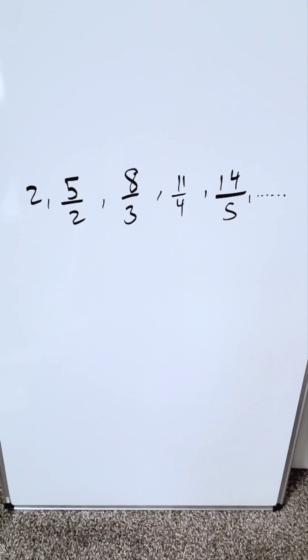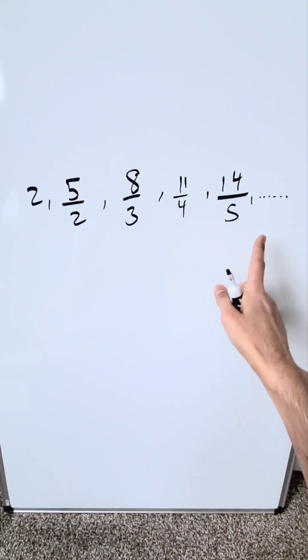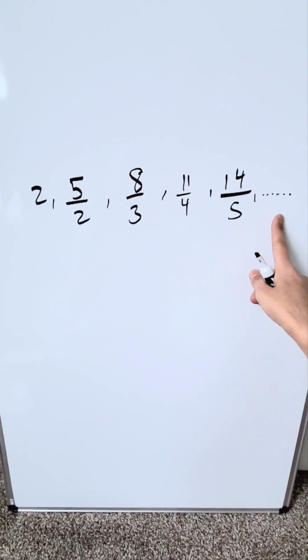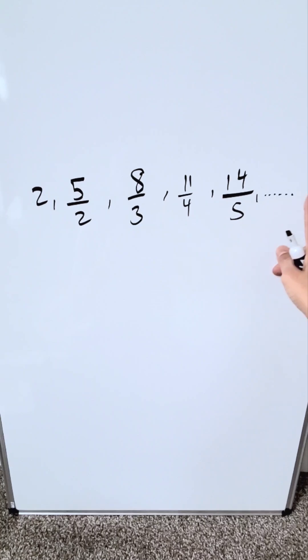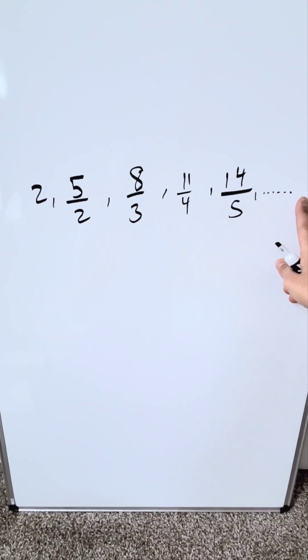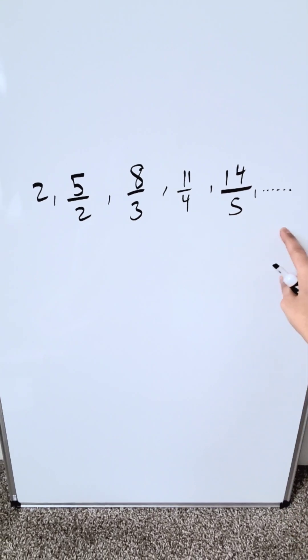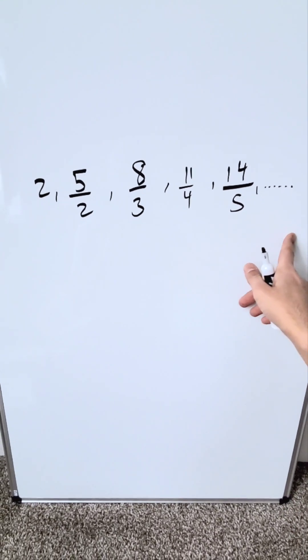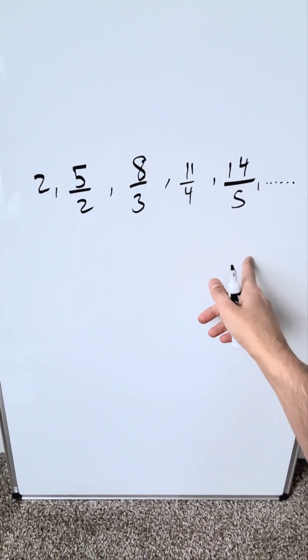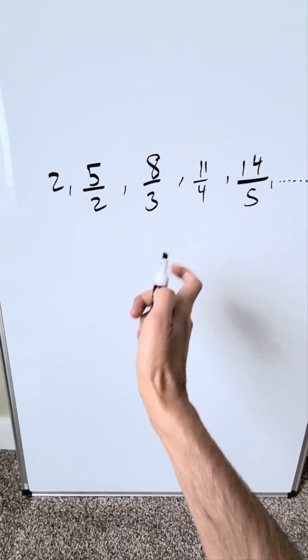We are going to determine the limit of this sequence. The limit of the sequence is the ultimate number, the final number that your sequence is tending towards. And you can determine that usually through a limit.